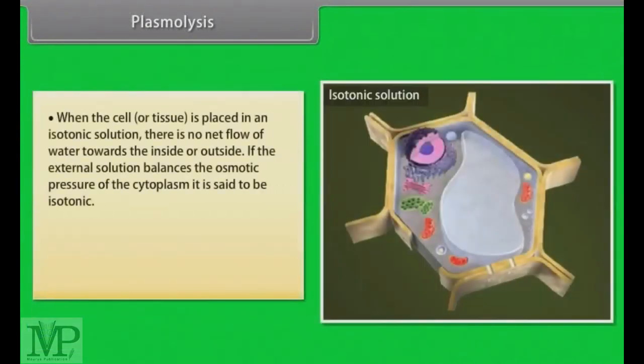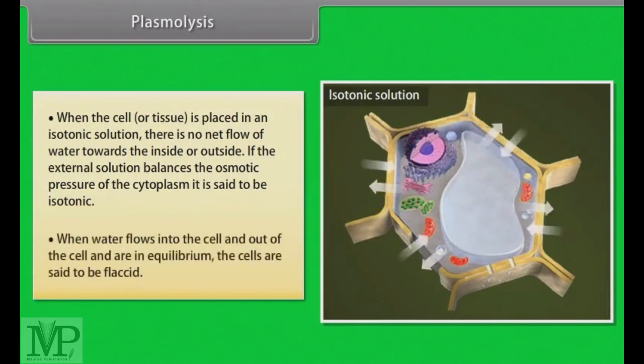When the cell or tissue is placed in an isotonic solution, there is no net flow of water towards the inside or outside. If the external solution balances the osmotic pressure of the cytoplasm, it is said to be isotonic. When water flows into the cell and out of the cell and are in equilibrium, the cells are said to be flaccid. The process of plasmolysis is usually reversible.